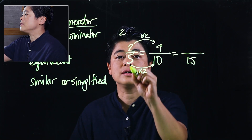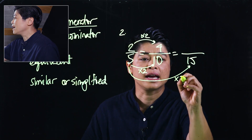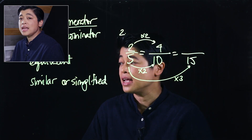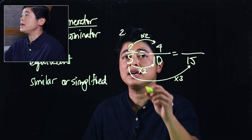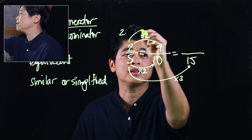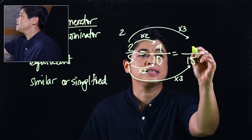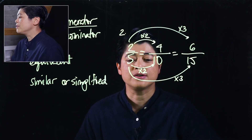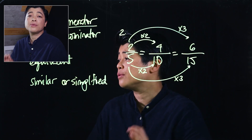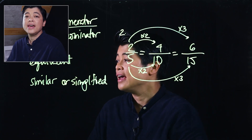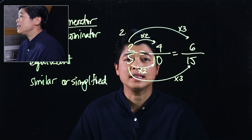For the next one, this is clearly a times three. So if I multiply the denominator by three, I have to multiply the numerator by three as well, which gives us six over fifteen. So two-fifths is equivalent to four-tenths and six-fifteenths.